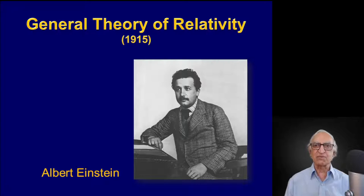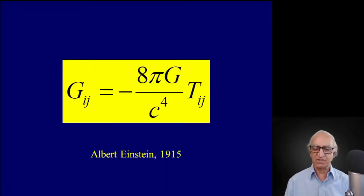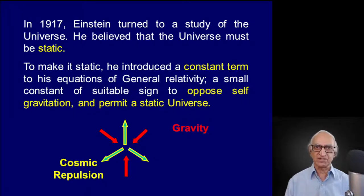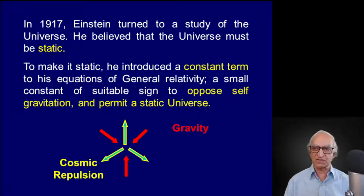Our story begins in November 1915, when Einstein published his General Theory of Relativity. Within two years, Einstein turned to a study of the universe using his newly discovered theory. There was a difficulty in discussing the universe as a whole in Newtonian theory if the universe happened to be infinite, but there is no such problem in General Relativity. So Einstein embarked on a study of the dynamics of the universe using his new theory of gravity.